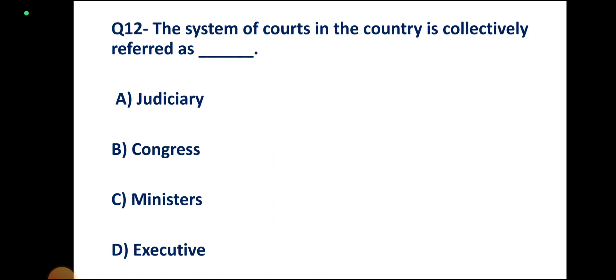Question number 12. The system of courts in the country is collectively referred to as what? Options: Judiciary, Congress, Ministers, Executives. Correct answer: Judiciary.